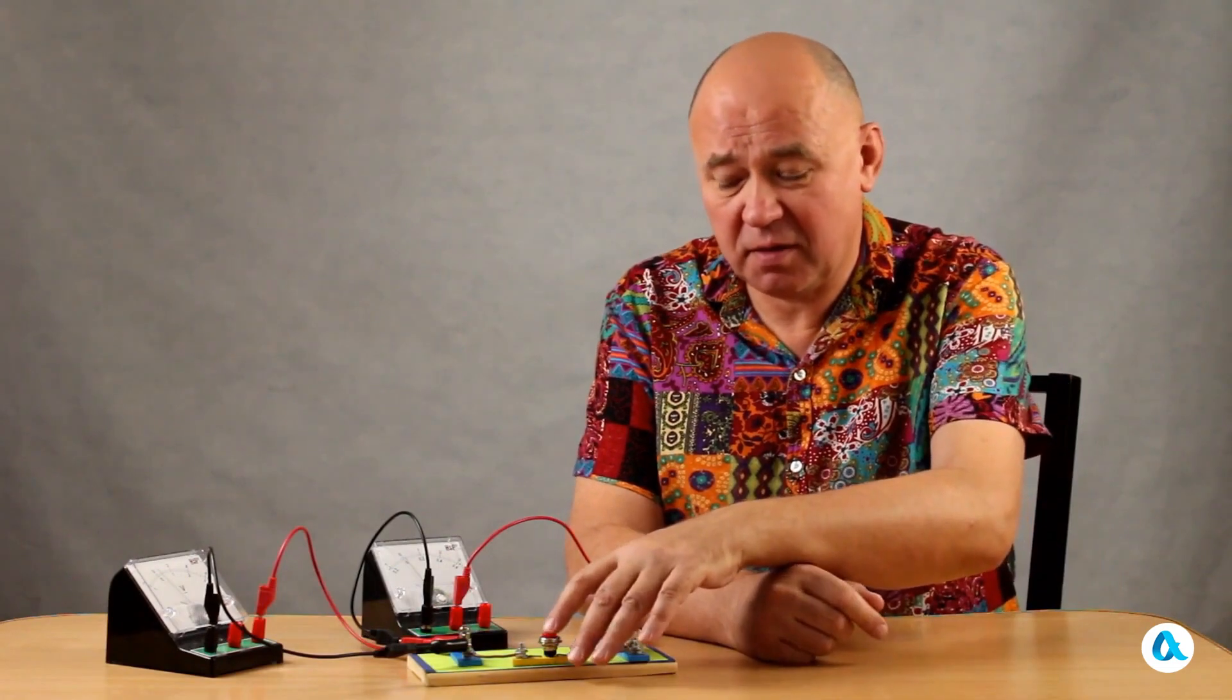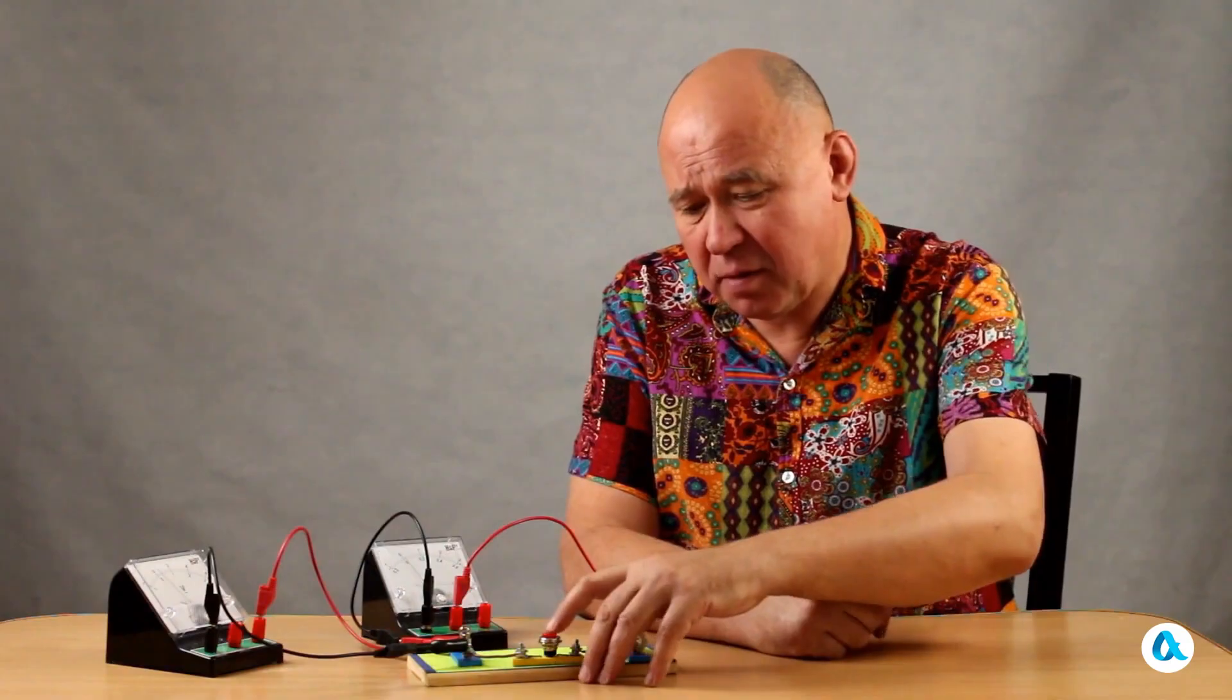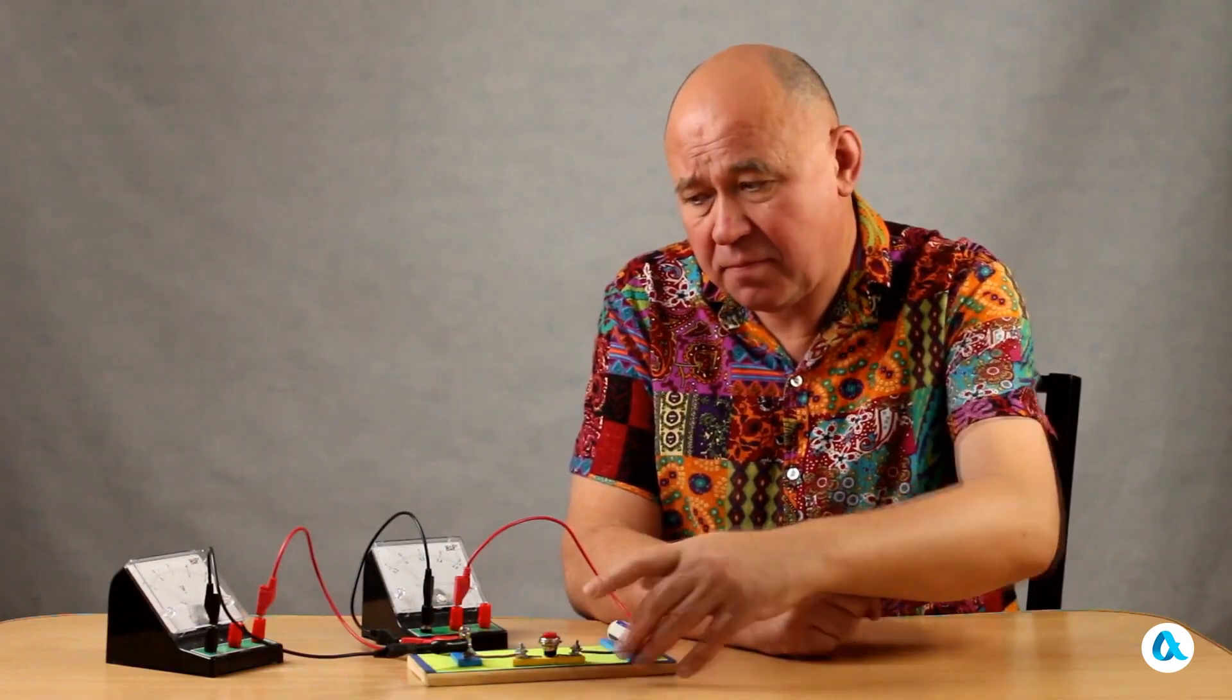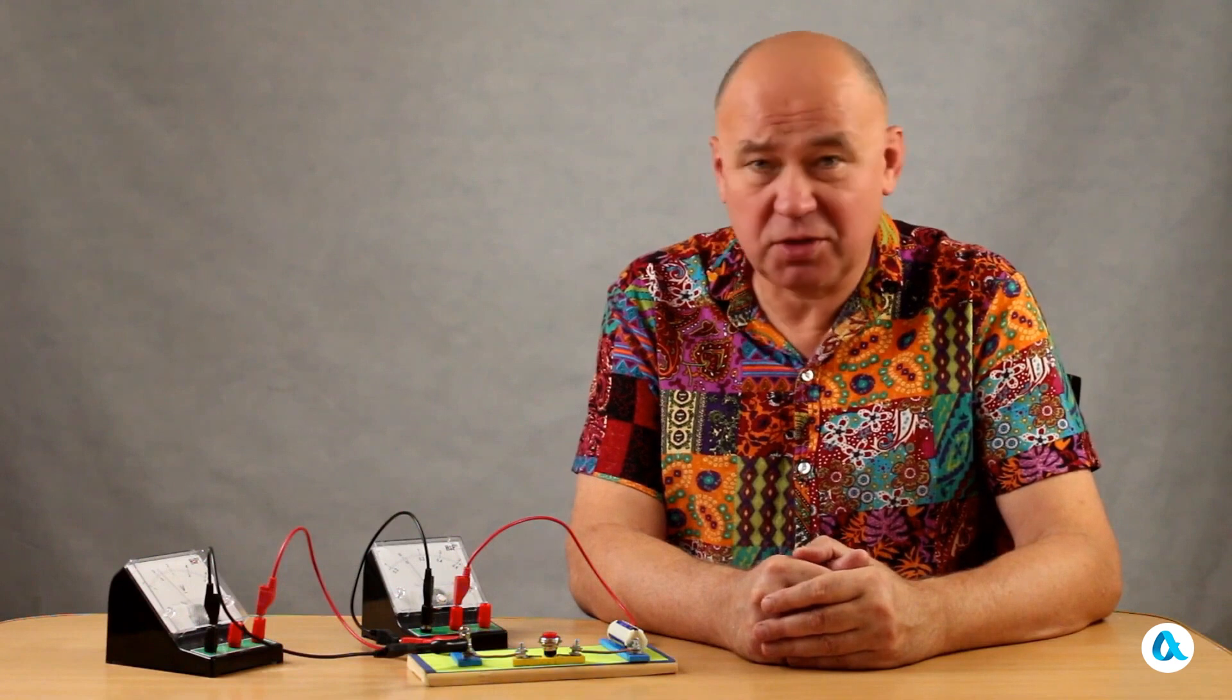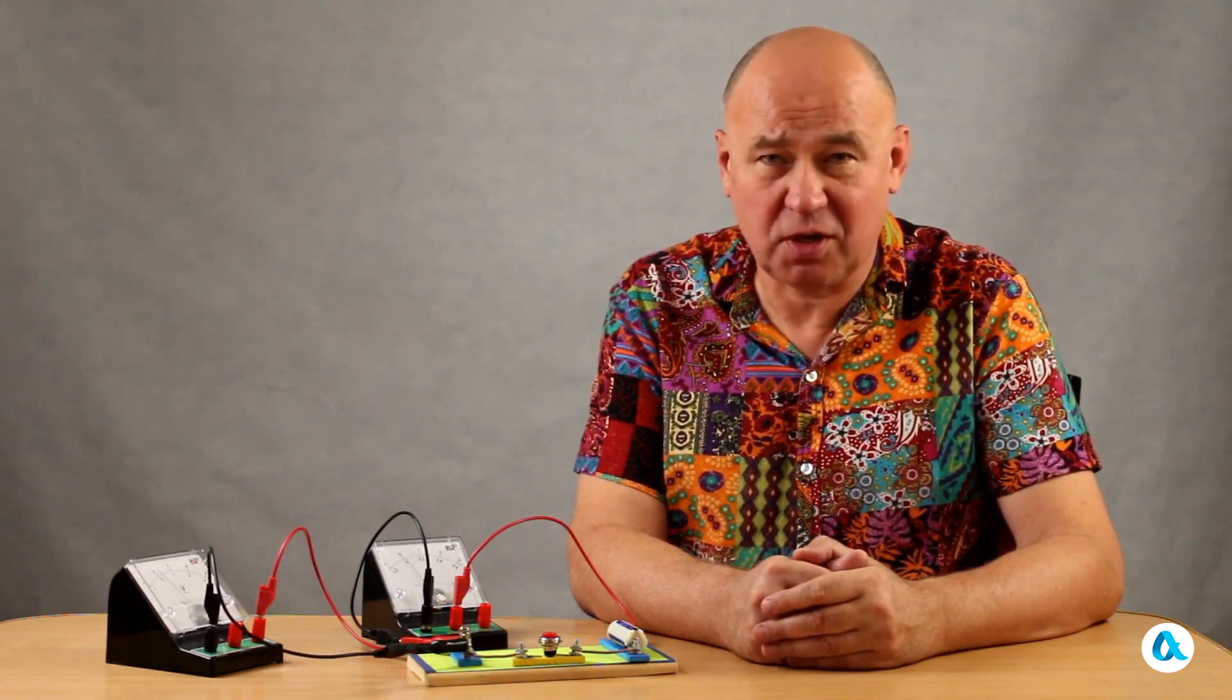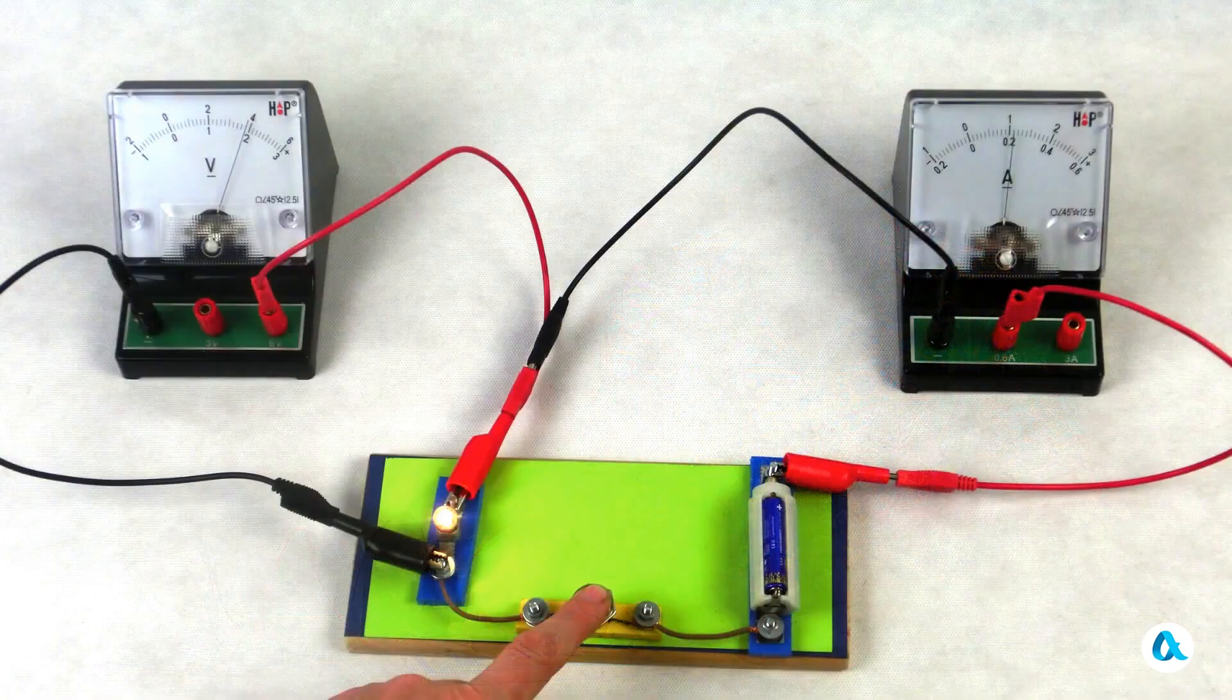Here I have assembled a simple circuit consisting of a battery, a light bulb and a button. And I've set up two measuring instruments, an ammeter to measure the current and a voltmeter to measure the voltage across the light bulb.